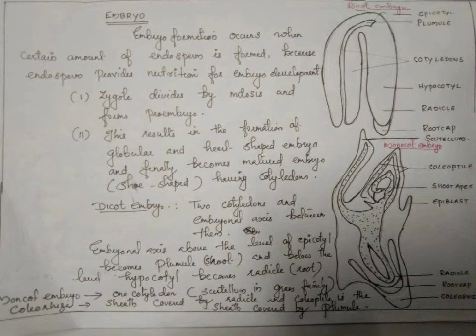The embryonal axis above the level of cotyledon becomes the epicotyl, developing into the plumule and shoot system. The embryonal axis below the level of cotyledon becomes the hypocotyl, which develops into the radicle, and the radicle develops into the root. In monocot embryo, there is only one cotyledon.